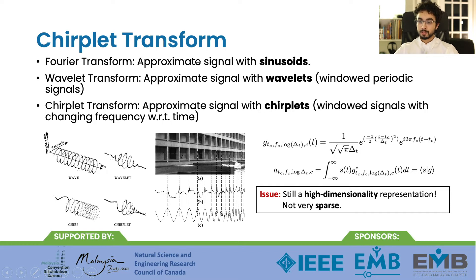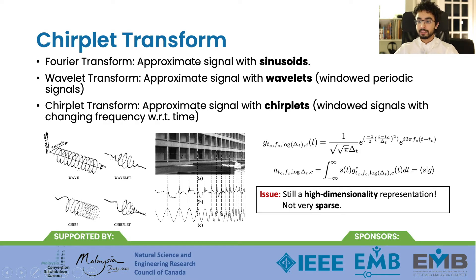The Chirplet Transform can be understood through analogy to other common signal transformation techniques. Most transforms analyze a signal with respect to a family of known functions. For instance, the Fourier transform analyzes a signal with respect to a family of sinusoidal functions, while the wavelet transform analyzes a signal with respect to a set of windowed periodic functions. The Adaptive Chirplet Transform is similar to the wavelet transform, but the frequency of the chirplets can change with time — they can either increase or decrease. Analyzing signals with the Chirplet Transform can show where a signal is up-chirping or down-chirping, but it produces a very high-dimensionality, non-sparse view of the data.